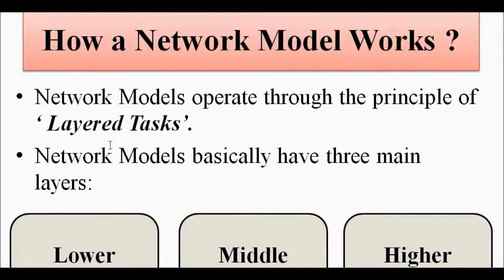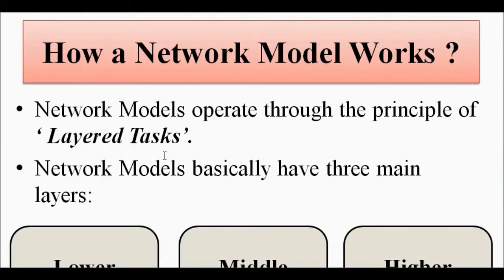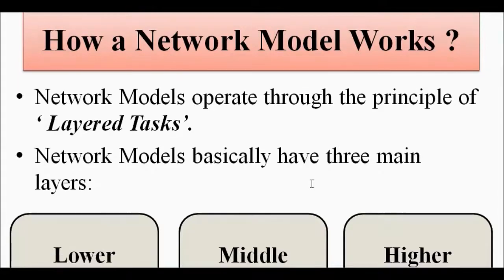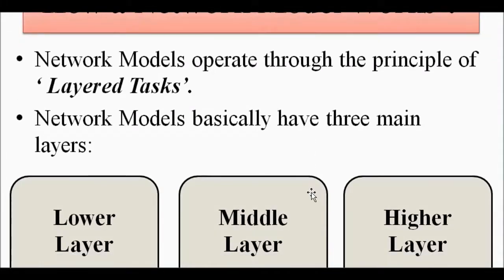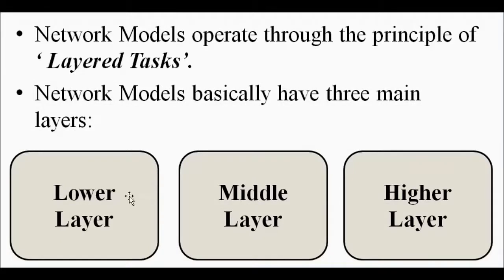The network model is built on the principle of layered architecture and it operates on the principle of layer tasks, meaning each layer has a specific task allotted to it. Basically, network models have three main layers: the lower layer, the middle layer, and the higher layer.